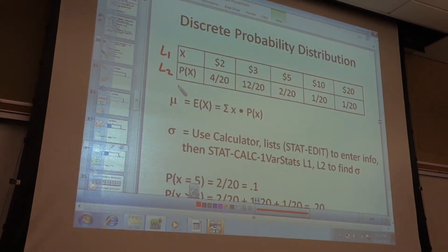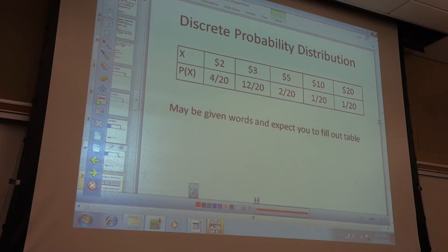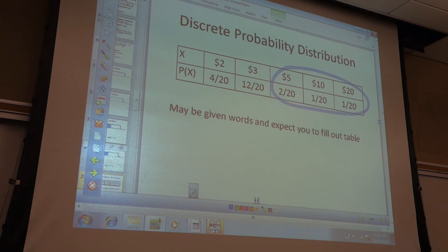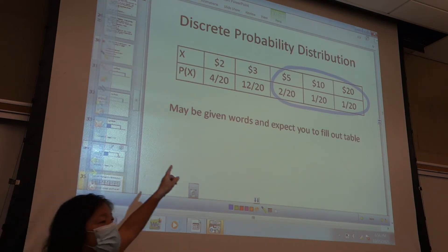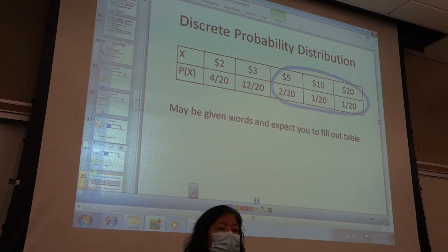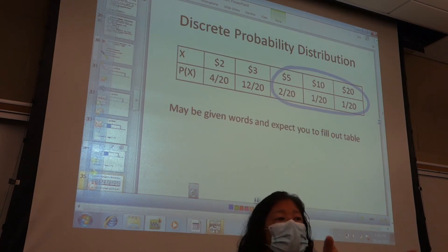For the probability that someone picks a grab bag worth $5 or more, you just add the probabilities for $5, $10, and $20. The probability distribution table gives you the probabilities directly — you don't have to compute them. So for '5 or more,' just add those probabilities up. It's straightforward; they're given to you.